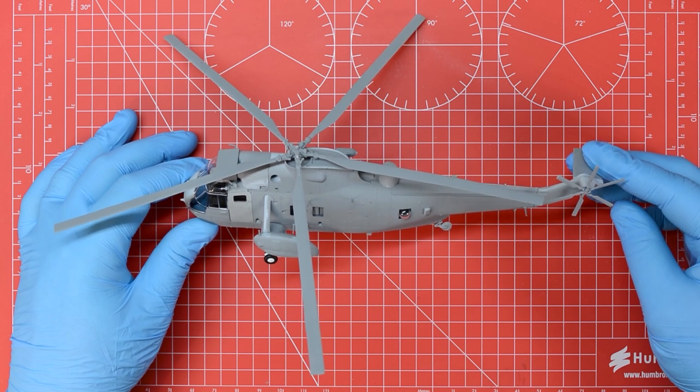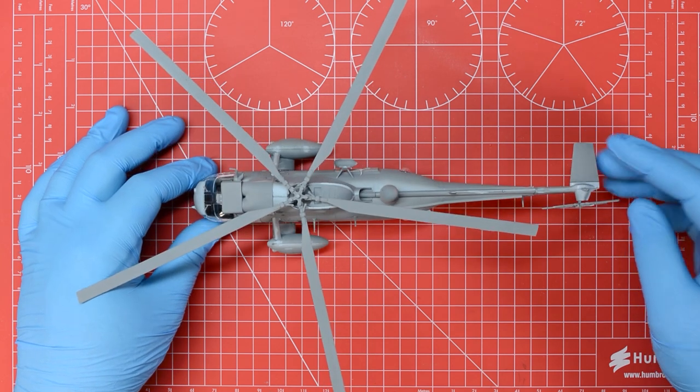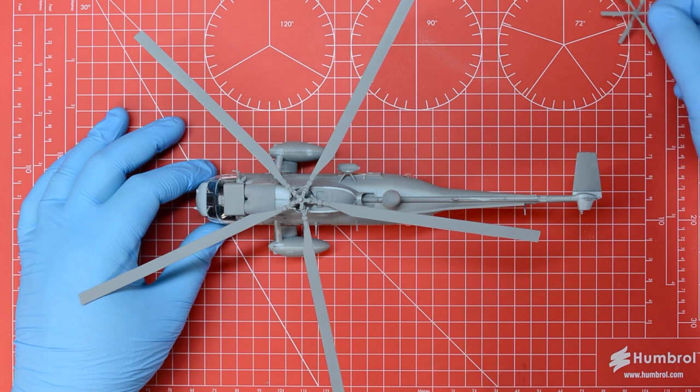With all of the detail parts added to the model and the rotor blades assembled we've popped these on for a quick test fit and then we're going to take them straight back off as this makes it slightly more accessible to paint the kit.